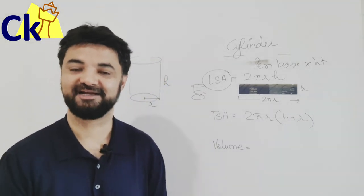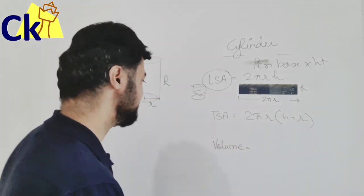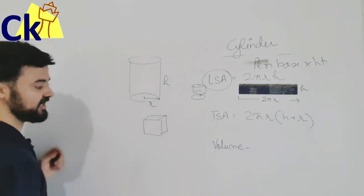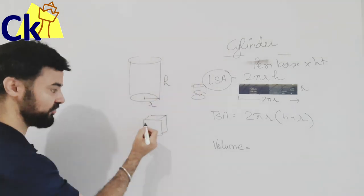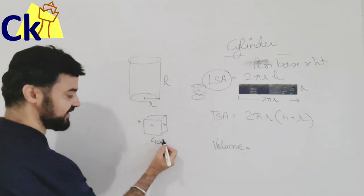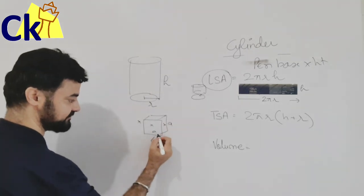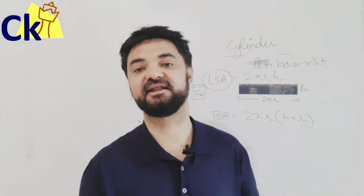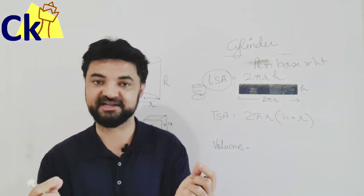Simple. I don't need to memorize any formula. For a cube, can you find the lateral surface area? Four sides - perimeter of the base is 4a, into height a, equals 4a². That's it.